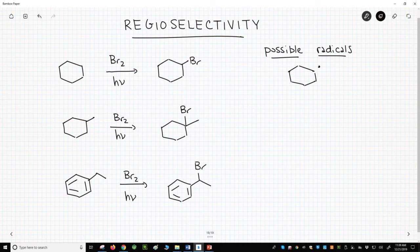How about methylcyclohexane? Well, the best possible radical from methylcyclohexane is this radical. It's tertiary.